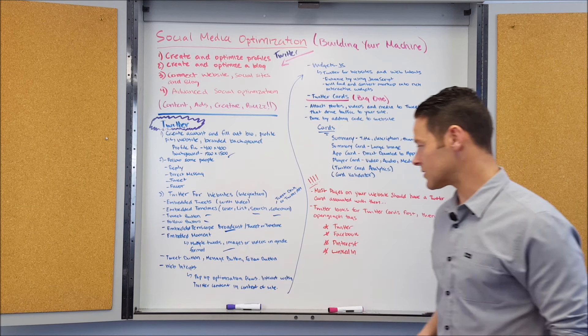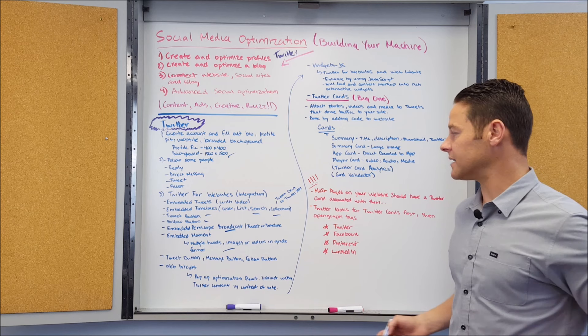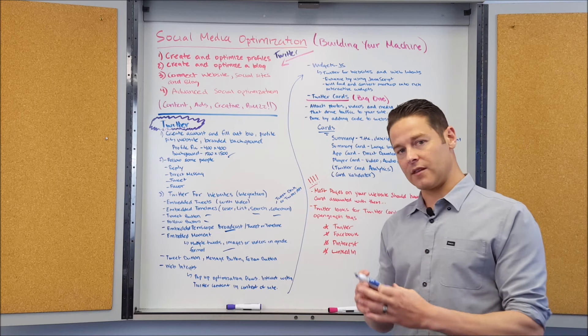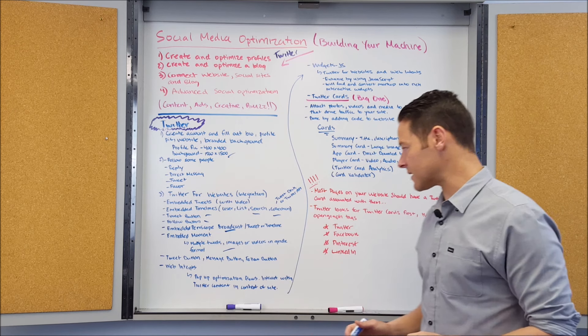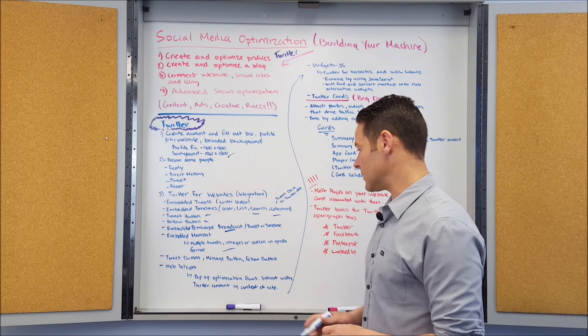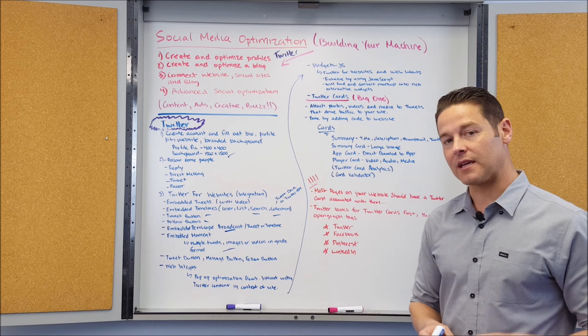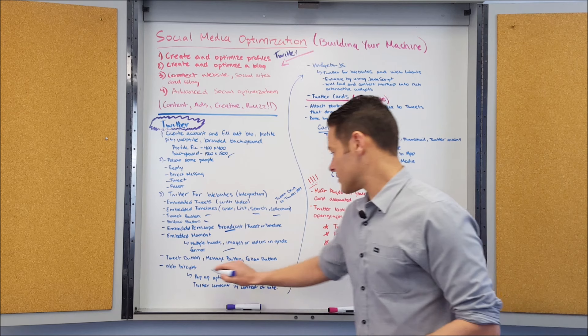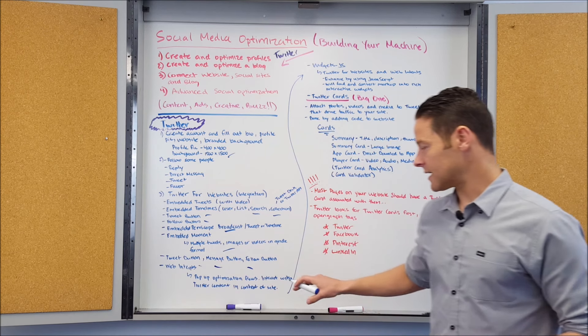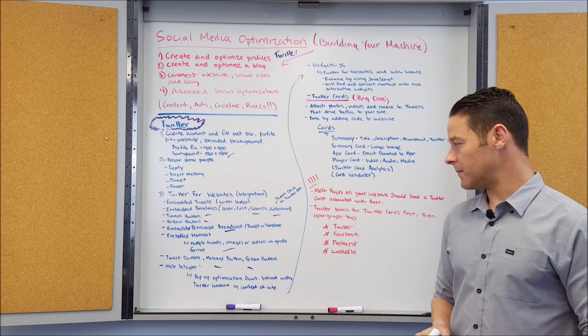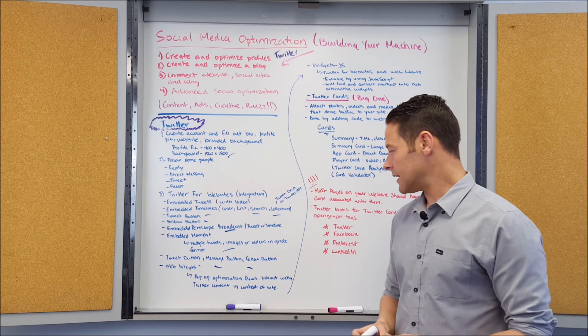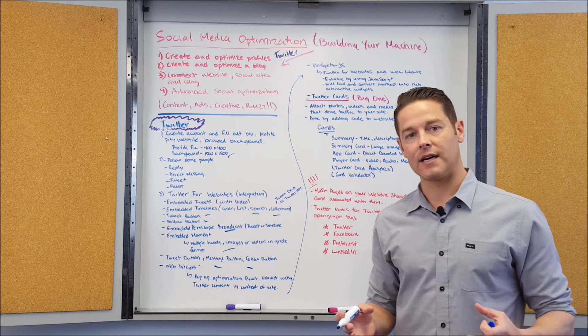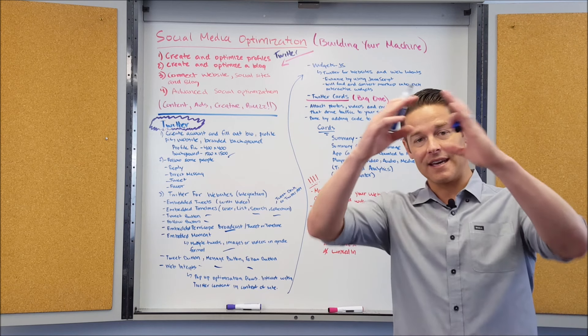You can also embed moments. A moment is basically like a series of things that happen in Twitter that got a big spike and resonated throughout the website. That could be multiple tweets, images, videos, and you can take that moment and make it so that it's archived through these type of widgets. Of course there's the tweet button, the message button, and the follow button. You can take these and put them on different web pages. A lot of times you're gonna see this on blogs or maybe like an about page.